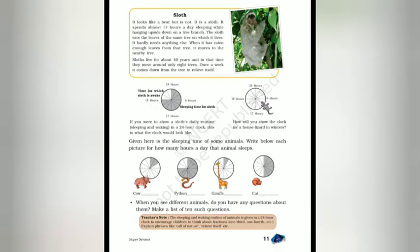Page 11 — Sloth। It looks like a bear, but यह beer नहीं है — यह sloth है। यह 17 घंटे सोता है एक दिन में — और पेड़ पर उल्टा लटककर सोता है। The sloth eats leaves of the tree it sleeps on। It hardly needs anything. जब काफी पत्तियां खा लेता है तो दूसरे पेड़ पर चला जाता है। इसकी age 40 साल होती है — और 40 साल में सिर्फ 8 trees ही change करता है। Once a week नीचे आता है टहलने के लिए।